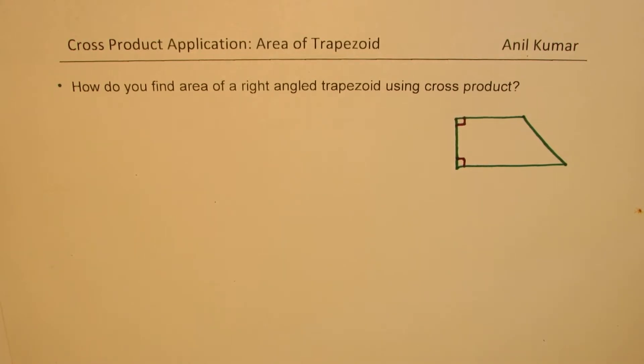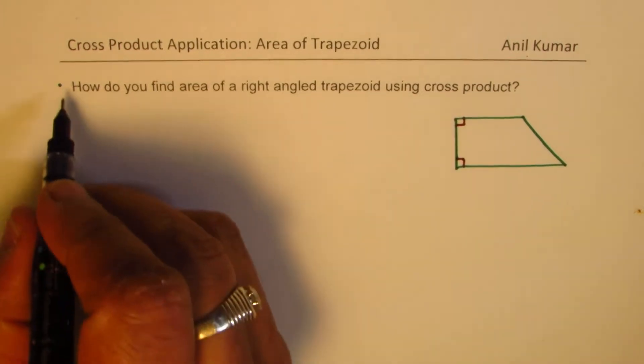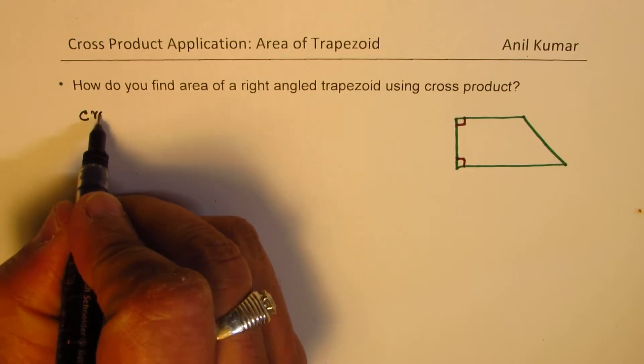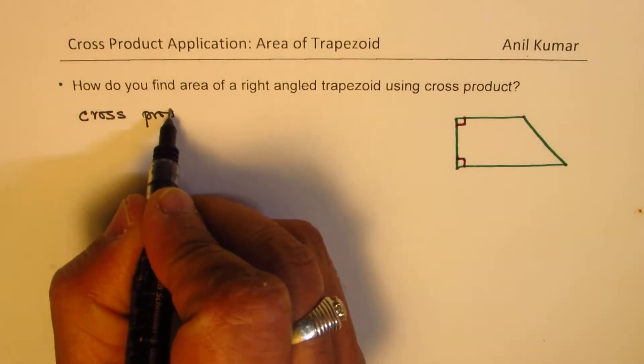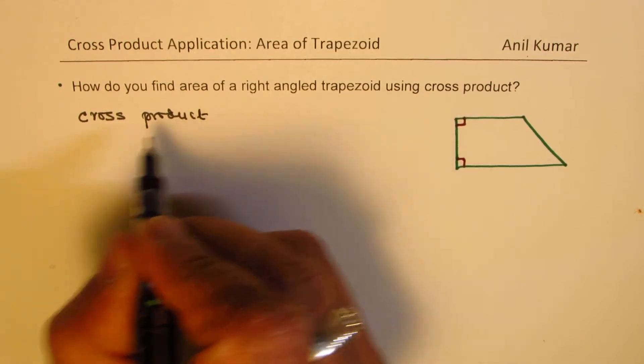So, this is a right angle trapezoid and we need to figure out how do we find area of a right angle trapezoid using cross product. As you know, cross product gives area. So, cross product magnitude.